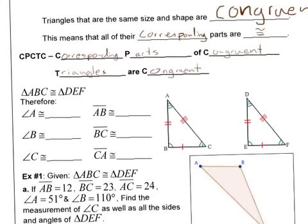So that means if these two triangles are congruent, angle A and D are congruent, angle B and E are congruent, angle C and F, segment DF, segment AC, segment AB, segment DE, segment BC, segment EF — these are all congruent with each other.